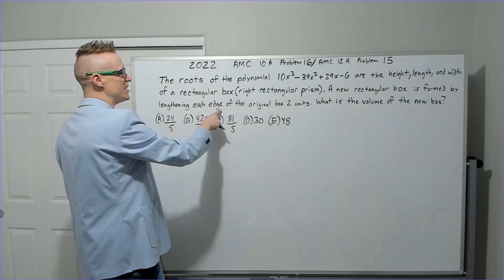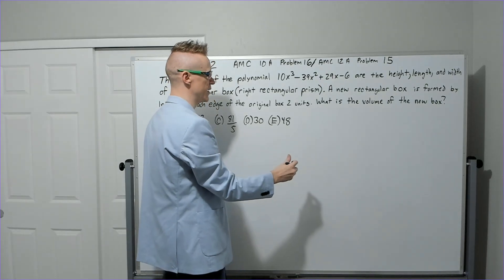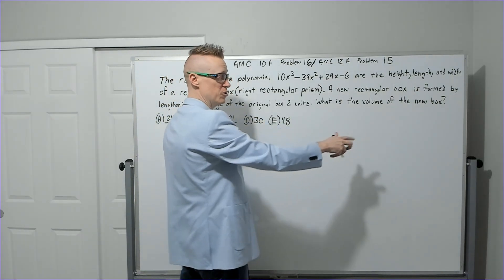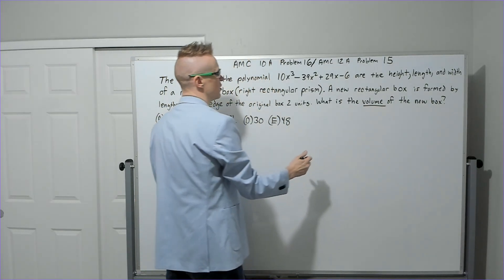So here we go. A new rectangular box is formed by lengthening each edge of the original box by two units. What is the volume of the new box?